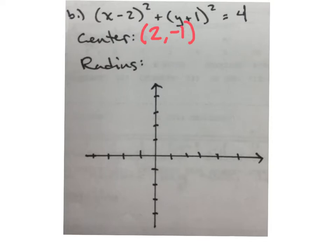For the radius, the radius comes from this constant on the other end, and all we have to do is take the square root of that 4. So the radius here is going to be 2.